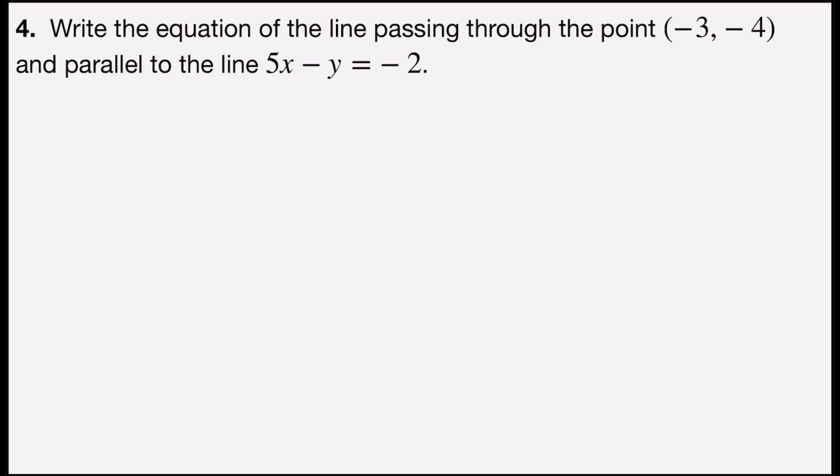So I'm going to use the point-slope form: y - y₁ = m(x - x₁).